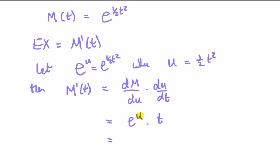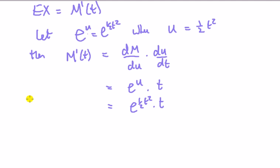Substitute back for u. That's e^(½t²) times t. Therefore we can say that the first moment, which is the first derivative of the moment generating function evaluated at 0: plug in zeros here, e^0 is 1 times 0 equals 0.